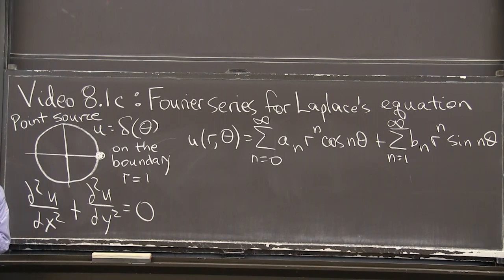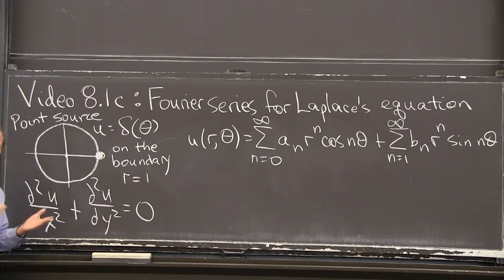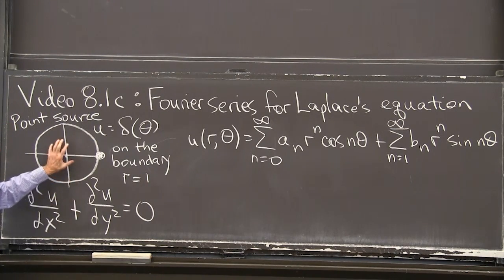In this problem, I'm going to put a source of heat at that point. So it will be a point source, a delta function. And on the rest of the boundary, temperature 0. So the boundary function is a delta function with a spike at that one point and 0 elsewhere. And our problem is to solve Laplace's equation inside the circle.